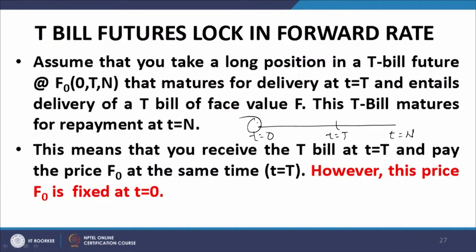The price, known at T equal to 0, will be paid at T equal to capital T — let us call this F(0, T, N). The face value of the bill paid at T equal to N is F_N. Both F_N and F_0 are known at T equal to 0, so the cash inflow and outflow are both fixed. Hence the interest rate over the period from T equal to capital T to T equal to N is known and fixed at T equal to 0 — that is how T-bill futures lock in the forward rate.